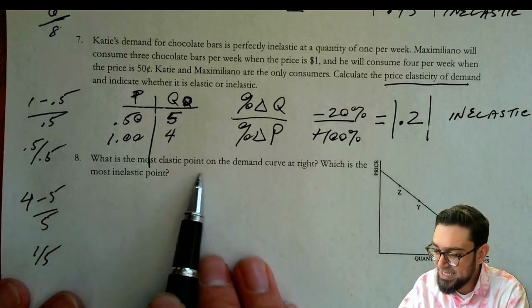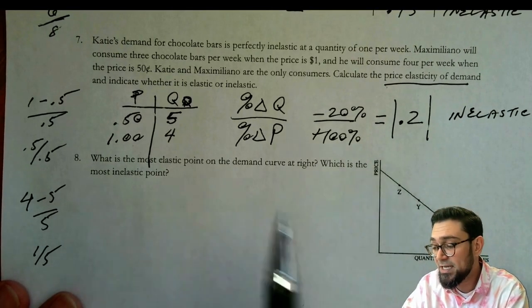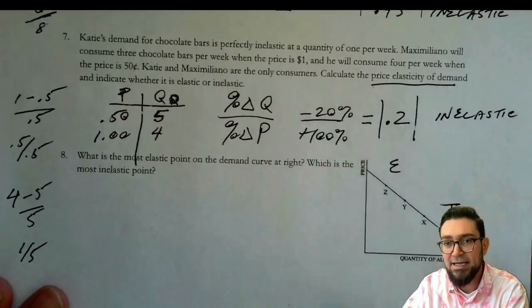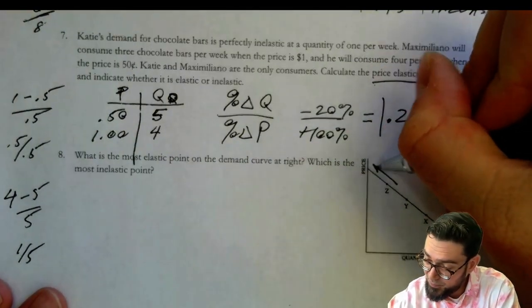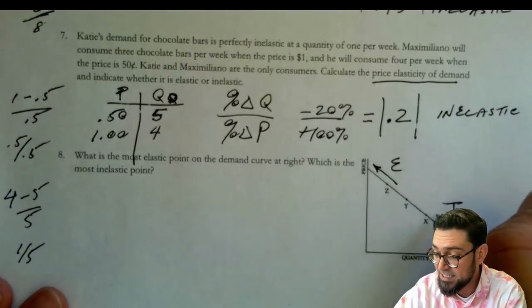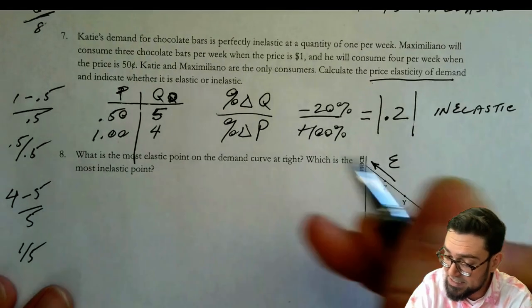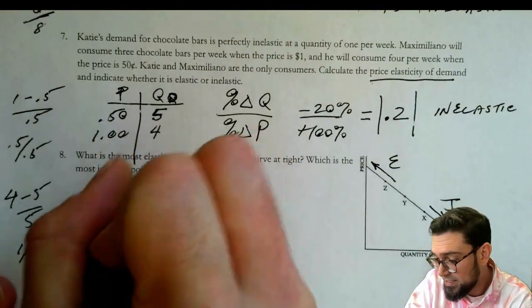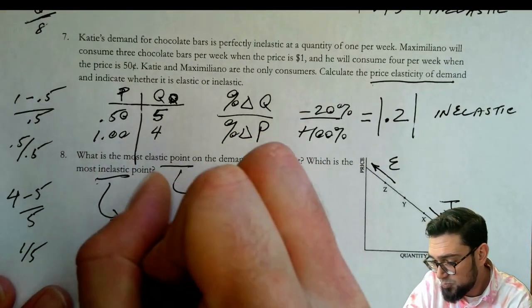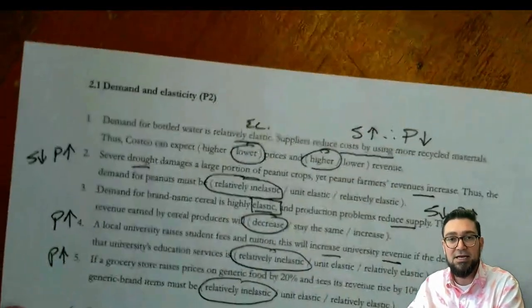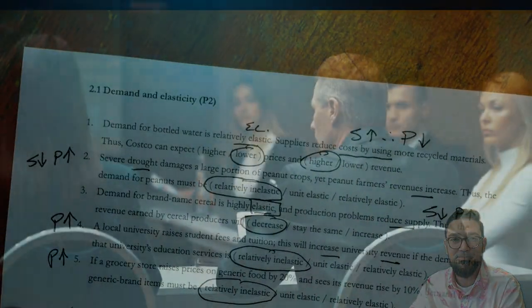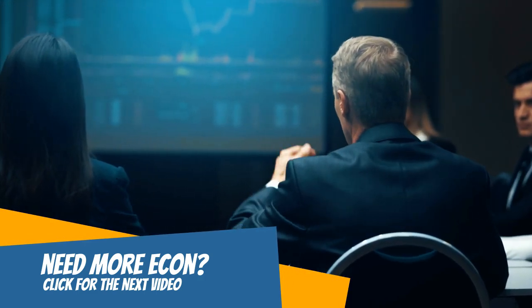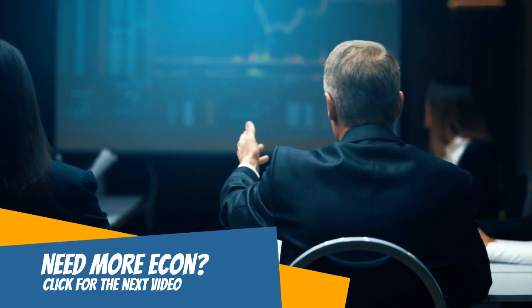Number eight: what's the most elastic point of the demand curve and which is the most inelastic point? We talked about how E comes before I. As we go farther up the demand curve, points become more elastic; as we go farther down, it becomes more inelastic. So the most elastic point is 0.Z and the most inelastic is 0.X. That'll do it for us — I'll see you next time.